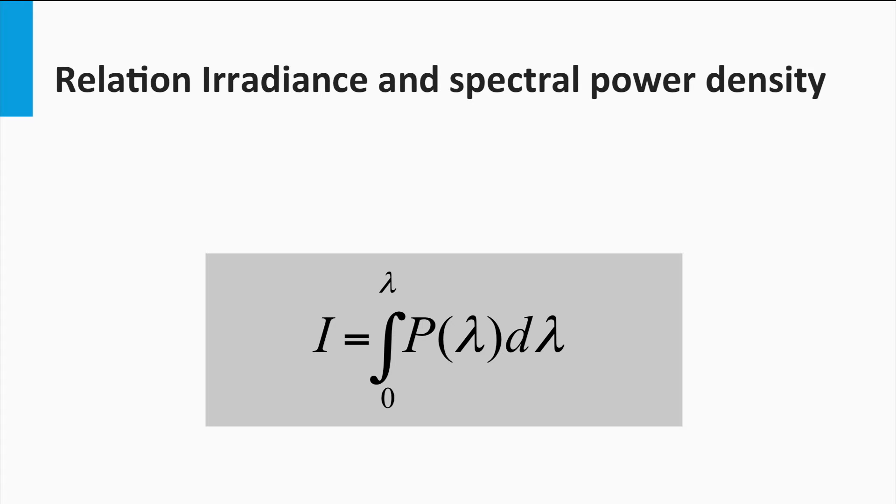Next we introduce the spectral power density P, a quantity which has spectral information in contrast to the irradiance. The spectral power density is the incident power per unit area and per unit wavelength. The irradiance and spectral power density are related to each other with this simple formula.